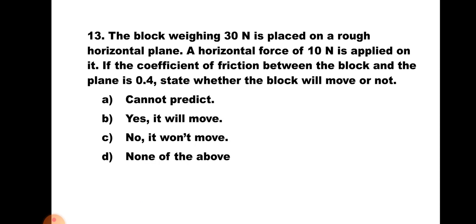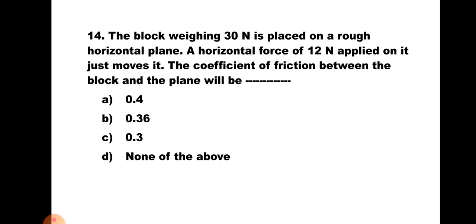Question number thirteen: A block weighing 30 N is placed on a rough horizontal plane. A horizontal force of 10 N is applied on it. Coefficient of friction is 0.4. State whether the block will move or not — a) Cannot predict, b) Yes it will move, c) No it won't move, d) None of the above. Limiting frictional force = 12 N. Actual force applied = 10 N, which is less than 12 N. Hence there will not be any motion. The correct answer is c) No it won't move.